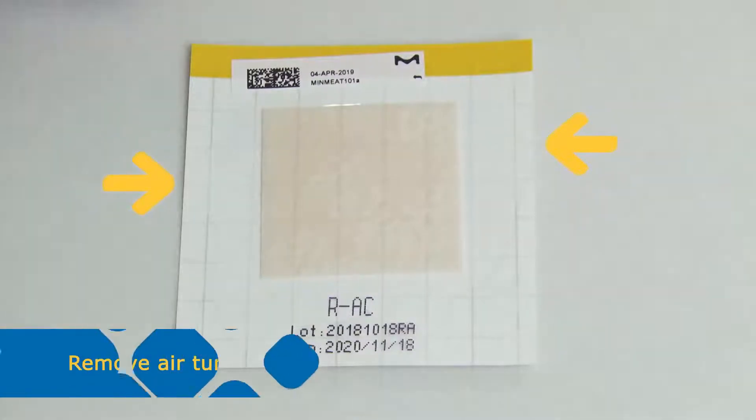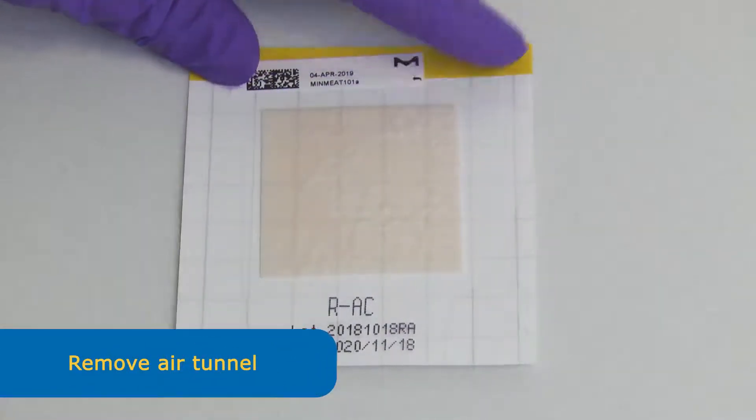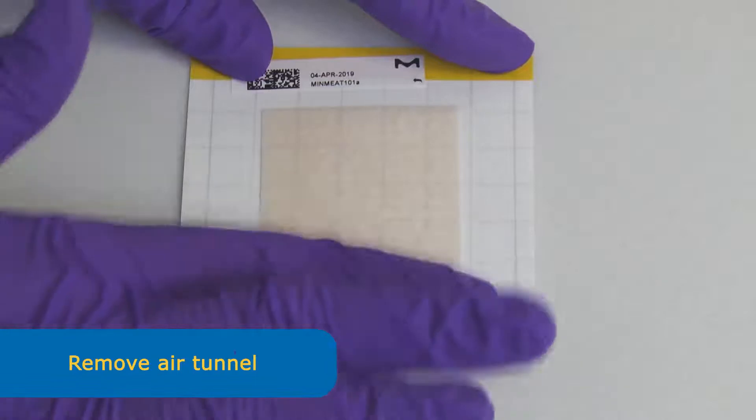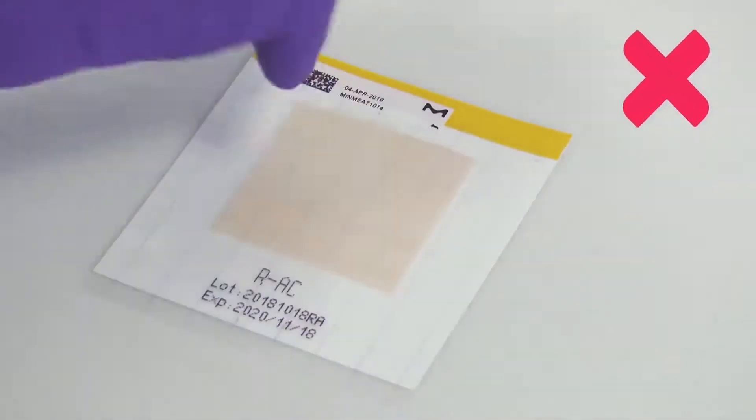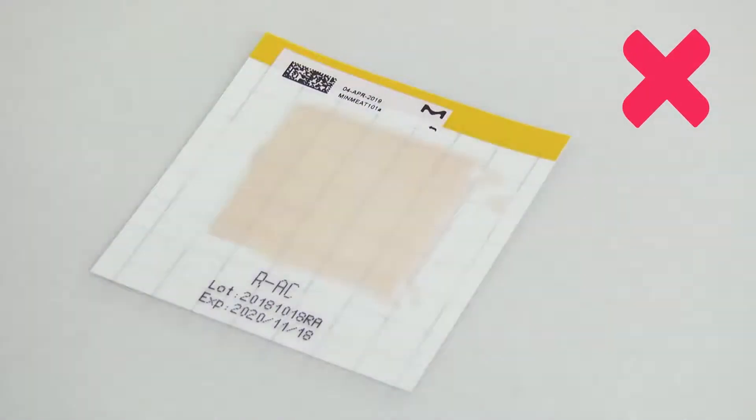Check the closed pad for any air pockets that reach to the end of the pad. They could allow air to enter and lead to the pad drying out. Do not apply pressure on the pad to close it or to remove air tunnels.